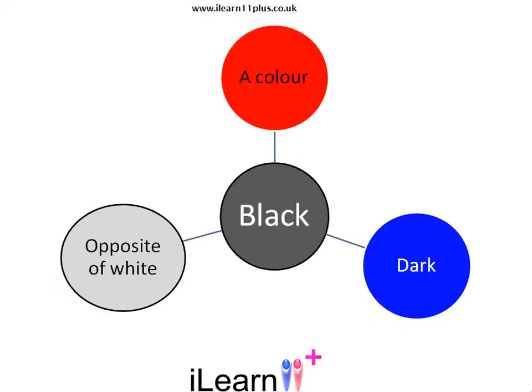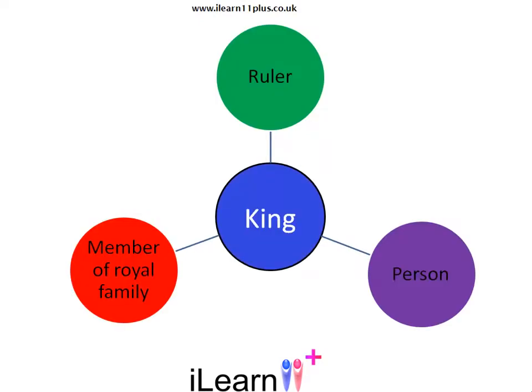Black. Is this how you would describe black? King. A king could be described as a ruler, as a person and as a member of a royal family.